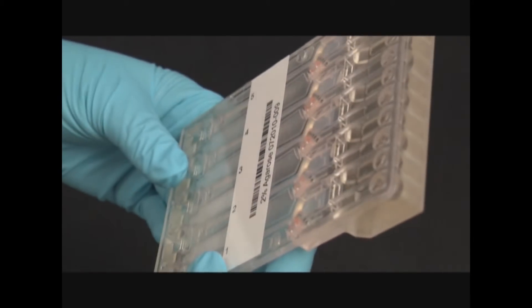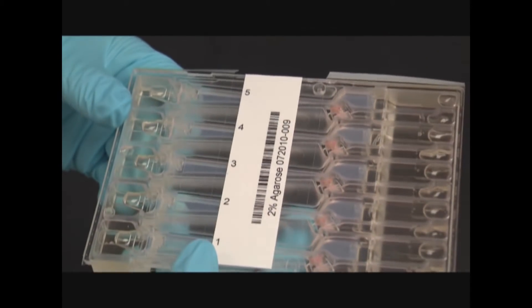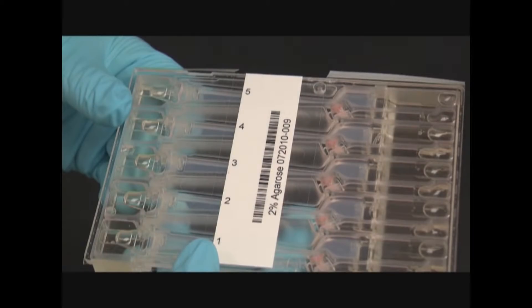Tilt the cassette down on the side of the sample wells to dislodge any bubbles trapped behind the elution wells.